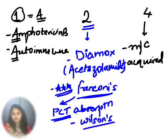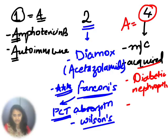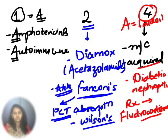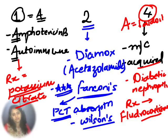For type 4 RTA, important causes include diabetic nephropathy and tubulointerstitial renal disease — it is an acquired cause. For treatment of type 4, since there is decreased aldosterone, you give something with mineralocorticoid action — fludrocortisone, which has mineralocorticoid action like aldosterone. For type 1, the treatment is potassium citrate, because there is hypokalemia so you replenish potassium, and citrate decreases the chances of nephrolithiasis or renal stone formation in type 1.